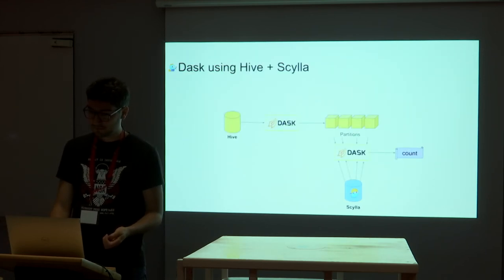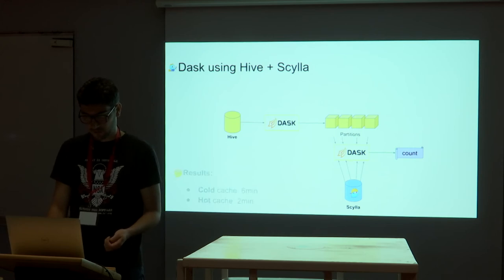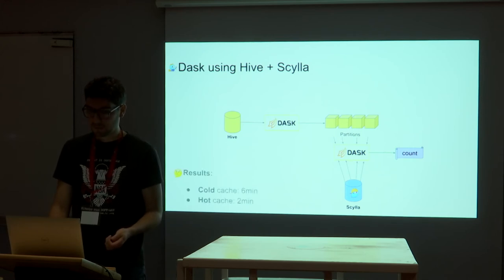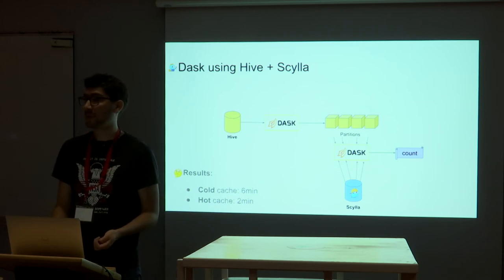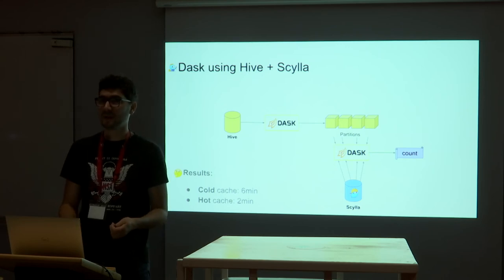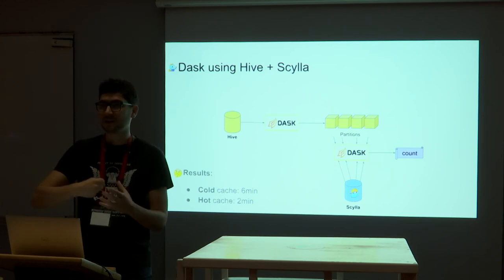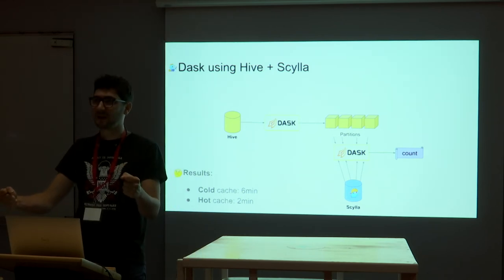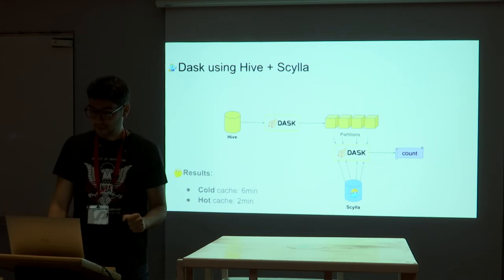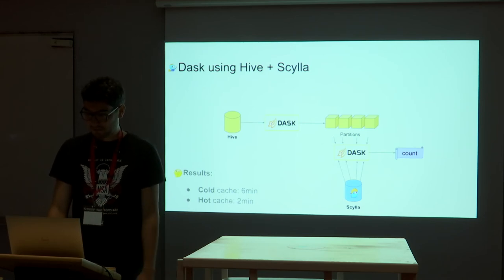It looks pretty similar to what we did in Spark, but done in Dask. The results: cold cache — 6 minutes; hot cache — 2 minutes. In the cold cache scenario, I could outperform Spark, mostly due to the startup latency I don't have. I could start querying faster instead of waiting for Spark's scheduler and JVM startup. So it already worked.